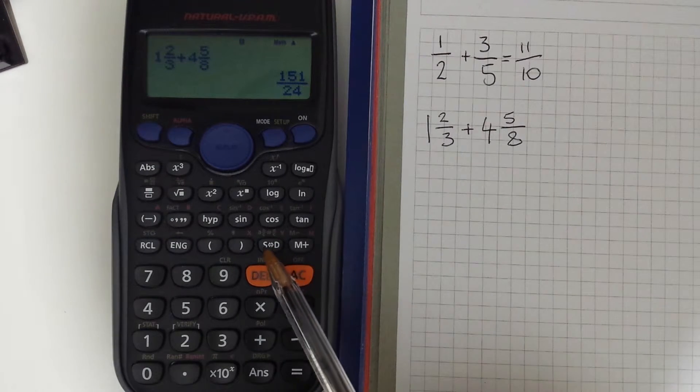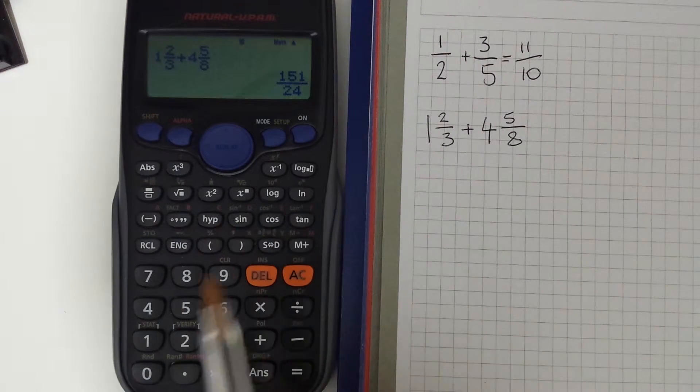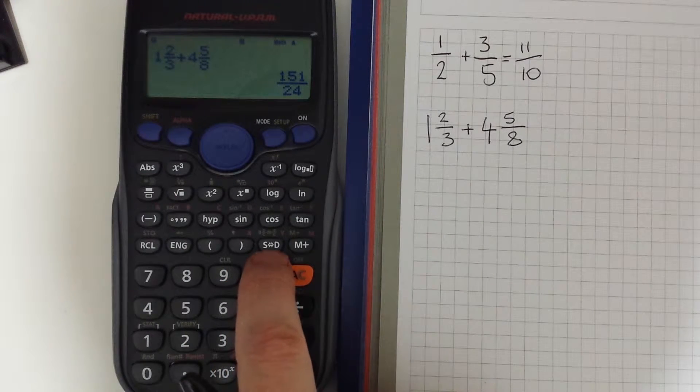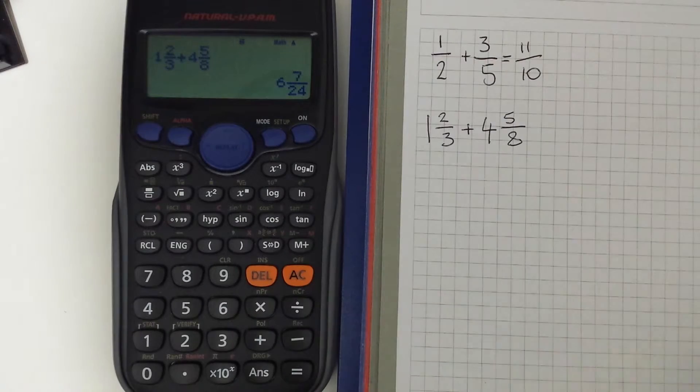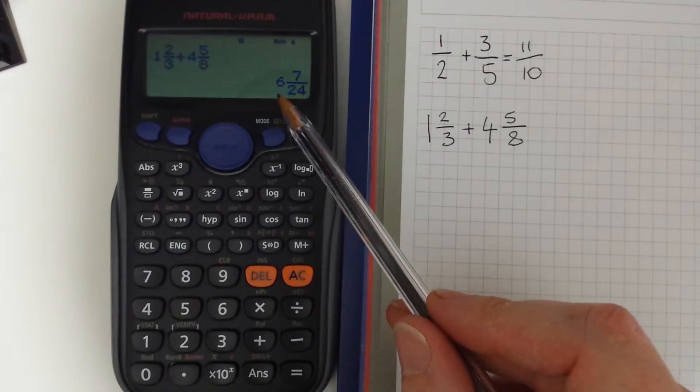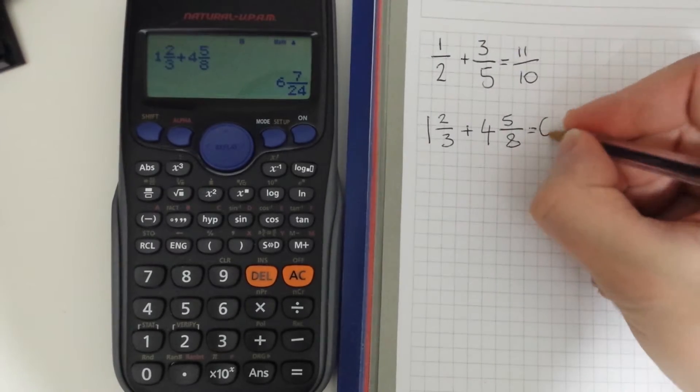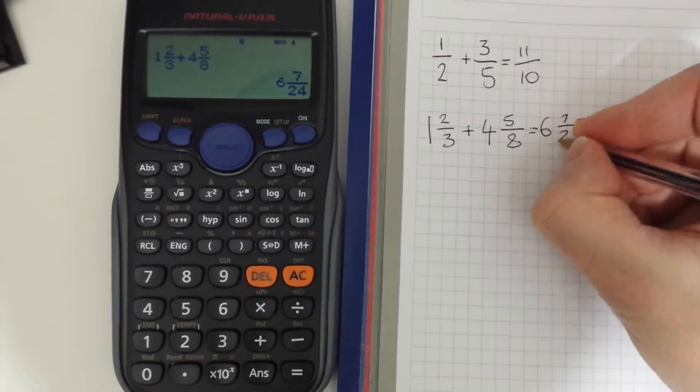Normally this converts fraction to decimal, but if we again press the shift key and then we press the sd key it will give us the answer in mixed number form. So 6 and 7 twenty-fourths.